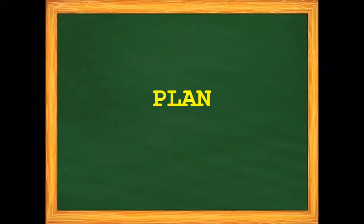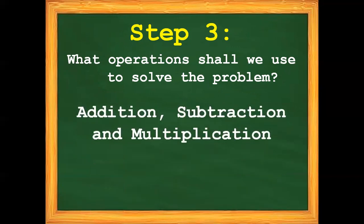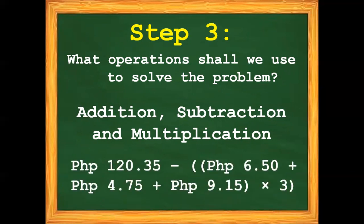After we understand the problem, we have to plan on how we are going to solve it. Step number 3: what operations shall we use? We have to add, subtract, and of course, multiply. And for our number sentence: 120 pesos and 35 centavos minus (6 pesos and 50 centavos plus 4 pesos and 70 centavos plus 9 pesos and 15 centavos) times 3, then close parenthesis.